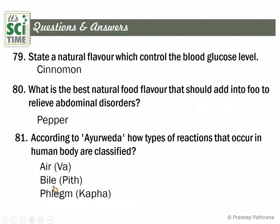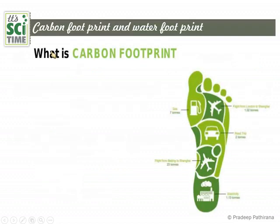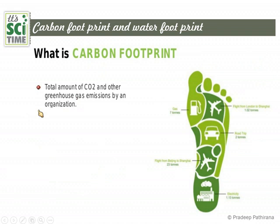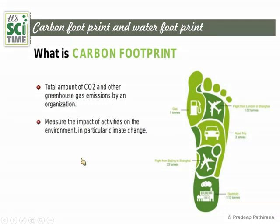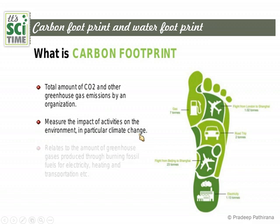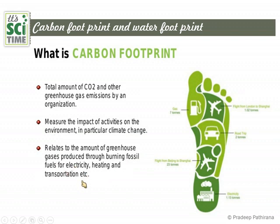Next: carbon footprint and water footprint. Carbon footprint refers to the total amount of carbon dioxide and other greenhouse gases emitted by an organization. It measures the impact of activities on the environment, particularly climate change. It relates to the amount of greenhouse gases produced through the burning of fossil fuels for electricity, heating, and transportation. Mainly, we burn fossil fuels to produce electricity, for heating, and the major one is transportation.